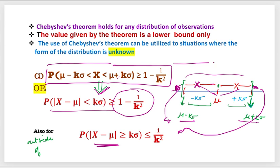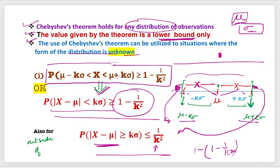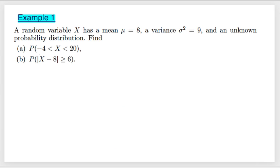Since the total probability of the data set is 1, the probability of being outside the bounds equals 1 minus whatever probability we get within the interval. When simplified, 1 and 1 cancel and you get 1 upon k squared. So these two probabilities — inside and outside — sum to 1. Now let us switch to problem solving to get more insight into the use cases of this theorem.